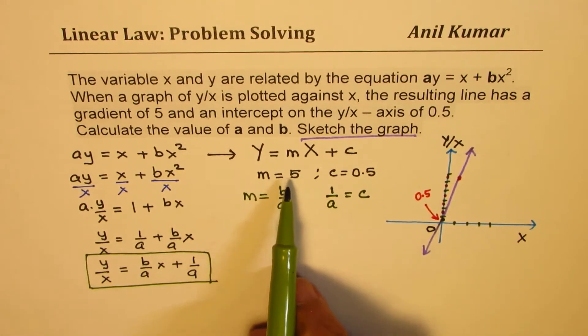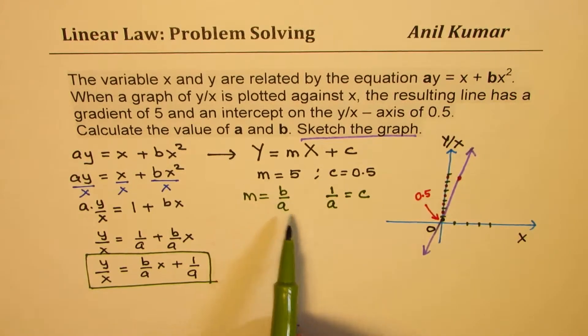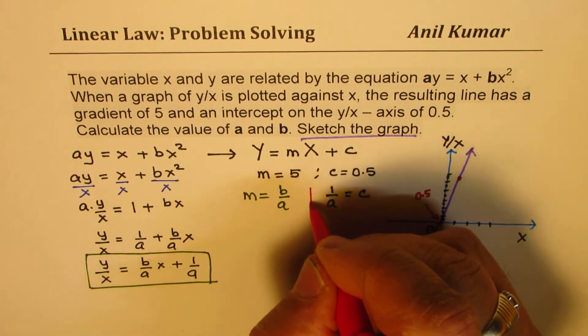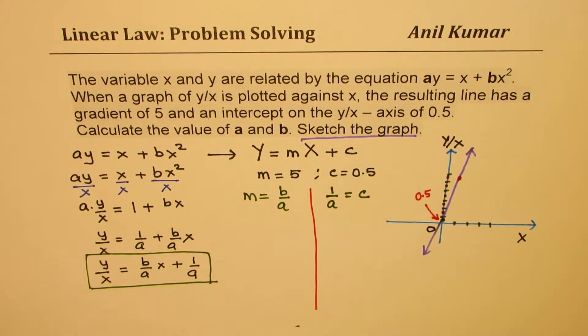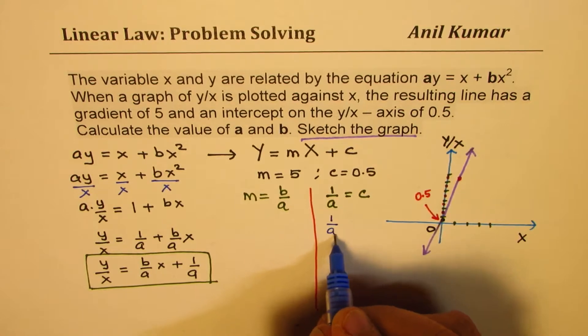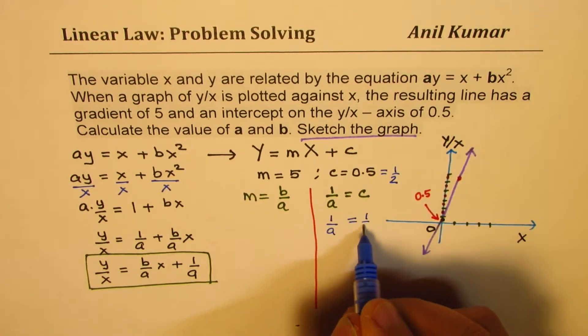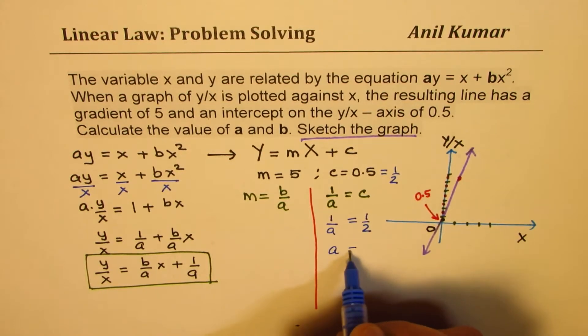Since we are given the gradient and the intercept, we can find both a and b. From here, we know c is 0.5. So 1/a, which is 1/2, is equal to 0.5. So a is equal to 2.